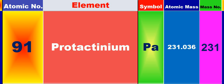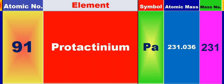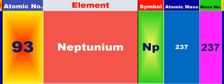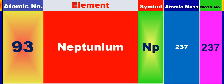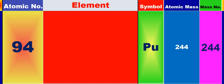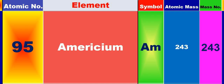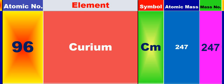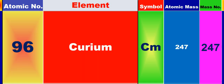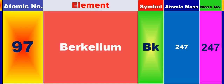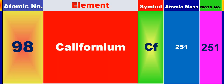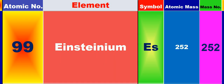91: protactinium. 92: uranium. 93: neptunium. 94: plutonium. 95: americium. 96: curium. 97: berkelium. 98: californium. 99: einsteinium. 100: fermium.